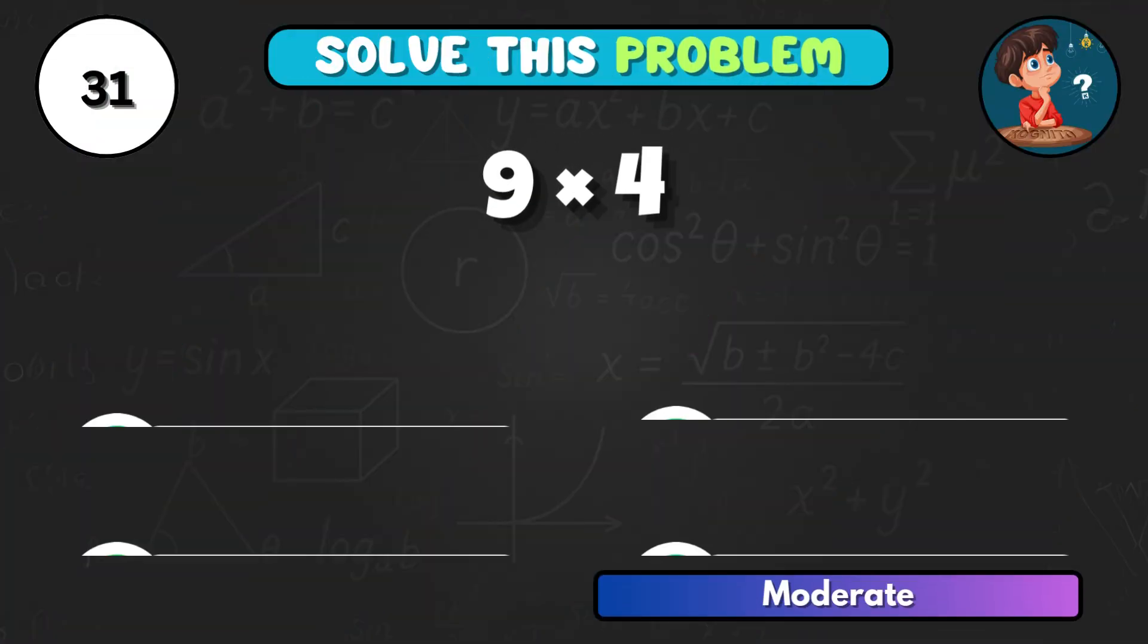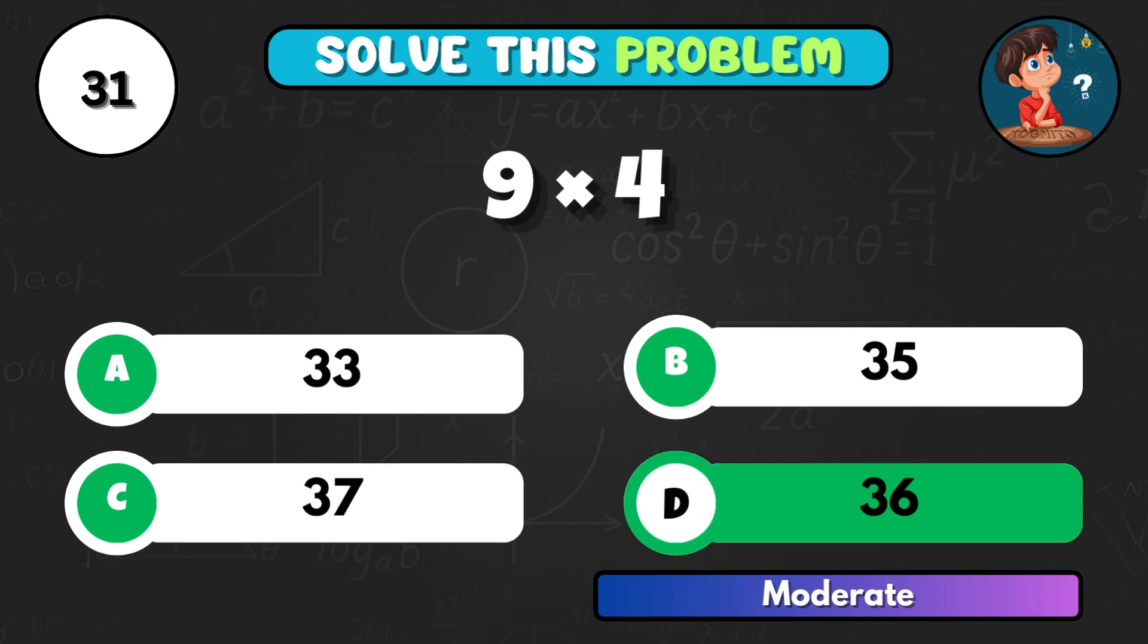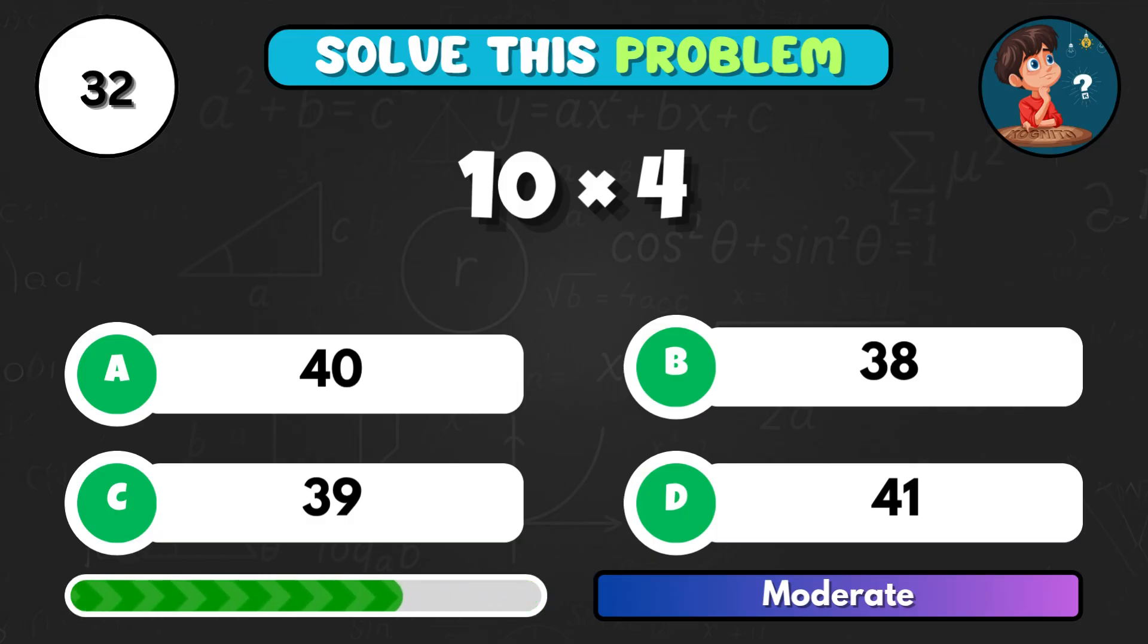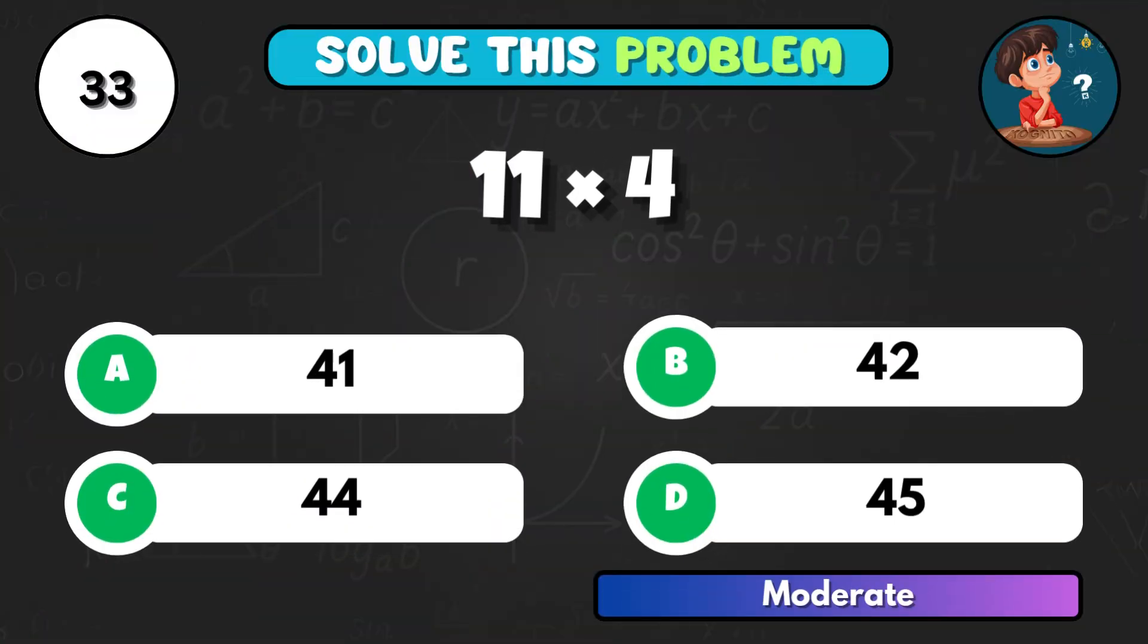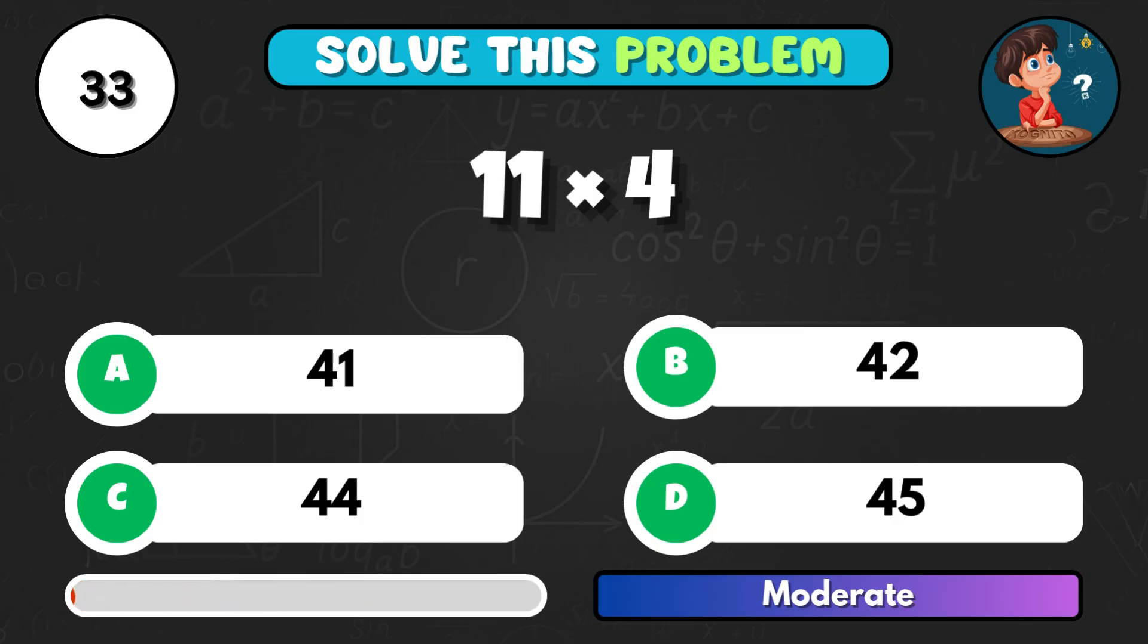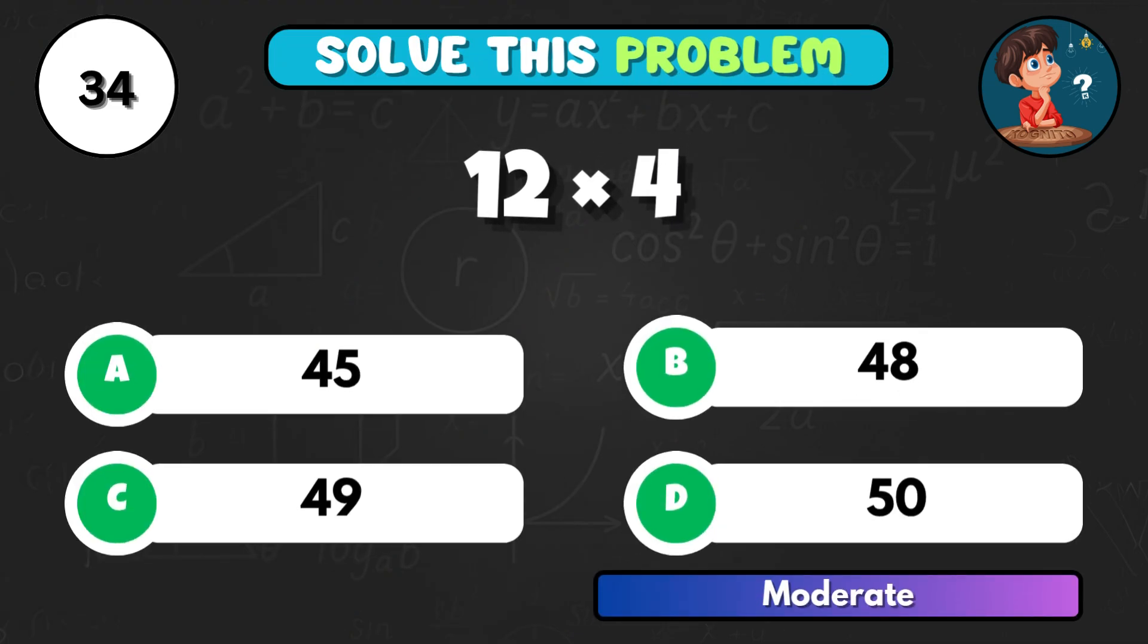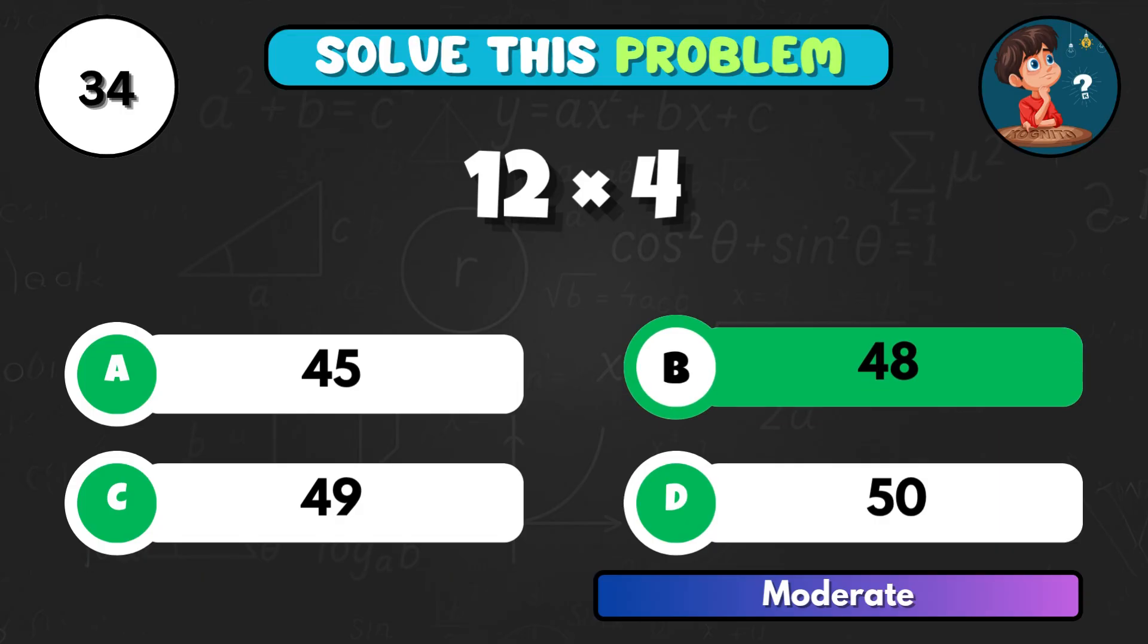9 times 4, can you solve it? That's D, total 36. 10 times 4, what's your result? Correct choice A, making 40. 11 times 4, what's the outcome? Option C equals 44. 12 times 4, what does that equal? That's B, total 48.